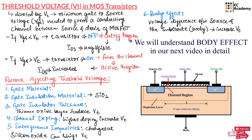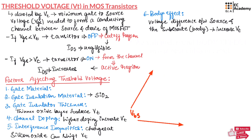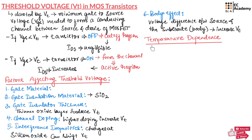These are the six factors affecting threshold voltage: gate material, gate insulating material, gate insulator thickness, channel doping, interface impurities, and body effect. The threshold voltage also depends upon temperature. As temperature increases, the carrier generation increases.